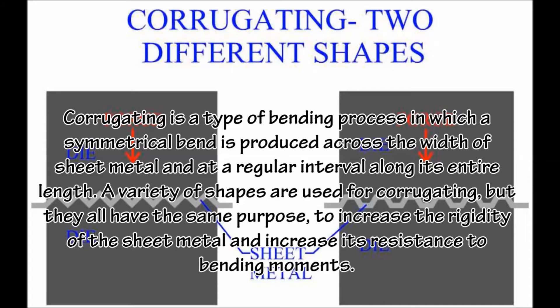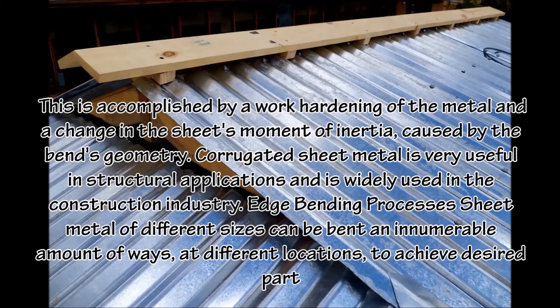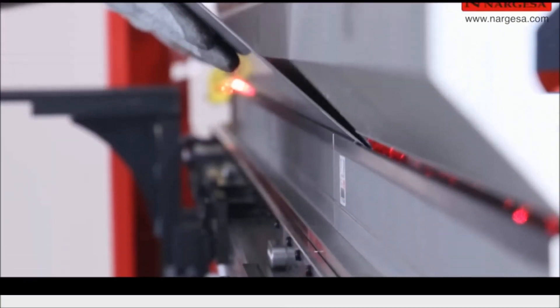Corrugating is a type of bending process in which a symmetrical bend is produced across the width of sheet metal at regular intervals along its entire length. A variety of shapes are used for corrugating, but they all share the same purpose: to increase the rigidity of the sheet metal and increase its resistance to bending moments. This is accomplished by work hardening of the metal and a change in the sheet's moment of inertia caused by the bend's geometry. Corrugated sheet metal is very useful in structural applications and is widely used in the construction industry.